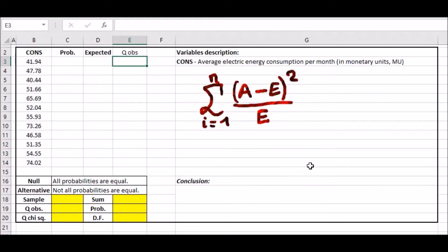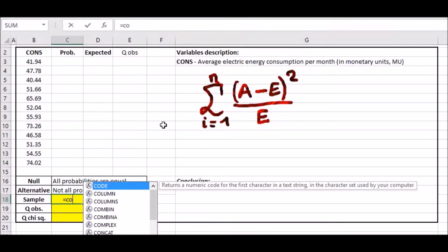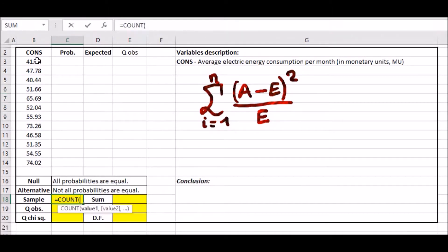Let's go right into it. First, calculate the sample size using the COUNT function. Press equals, type COUNT, and highlight how many variables there are. This tells us we have 12 exactly. The sum would be the sum total of all values. Type equals, type SUM, and add up all these values. This is useful to calculate the expected variable.